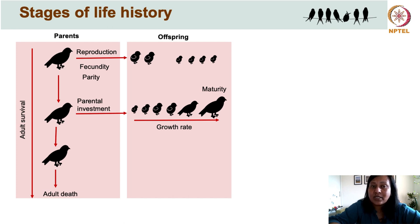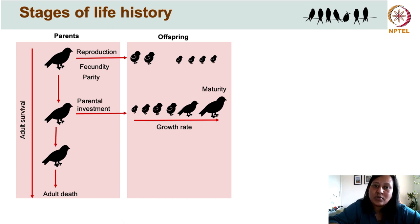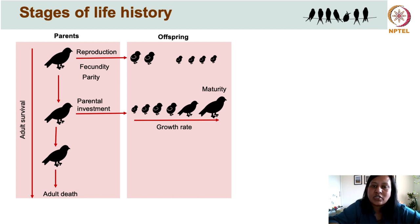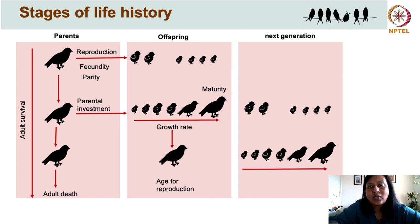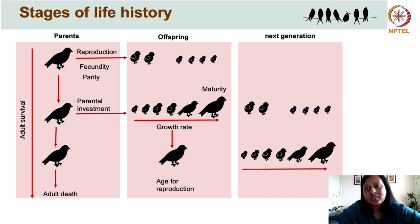Once the chicks are hatched, the adult has to decide on the amount of energy to invest in parental care, which determines how fast the chicks reach maturity. For the chicks, once they reach maturity, they must decide the age at which to start reproducing, which influences the energy spent on survival and persistence — and the age of reproduction is also related to how many offspring they produce over their lifetime, that is their reproductive success.